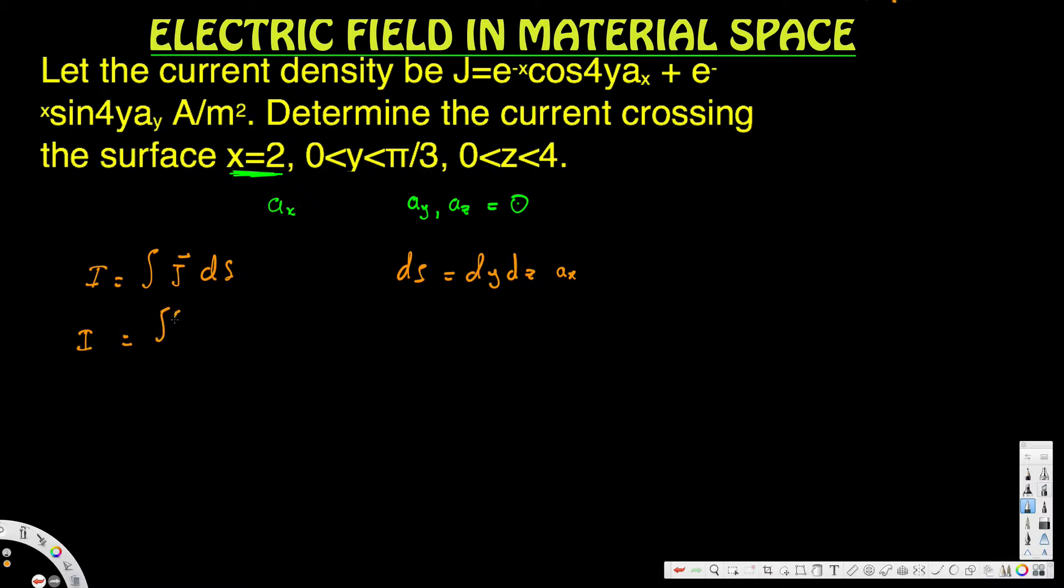I equals the double integral of e to the negative x—I'm just copying the J, the current density.